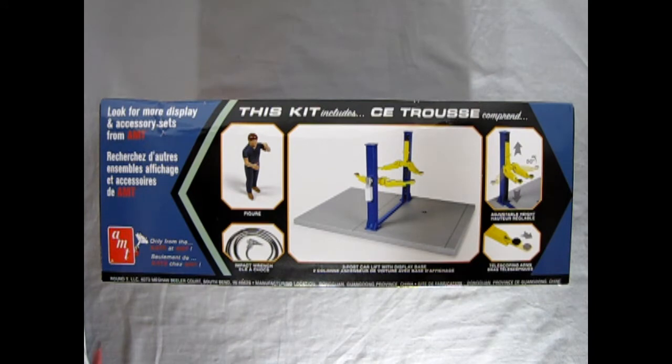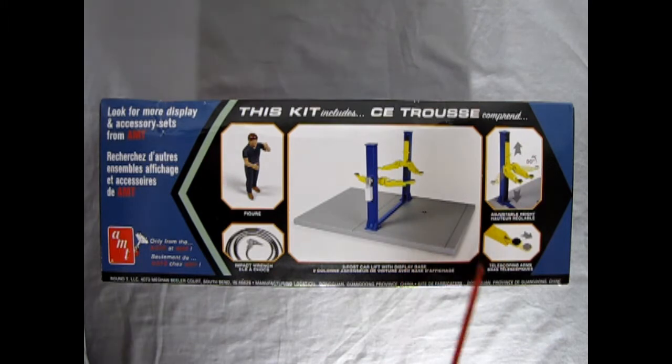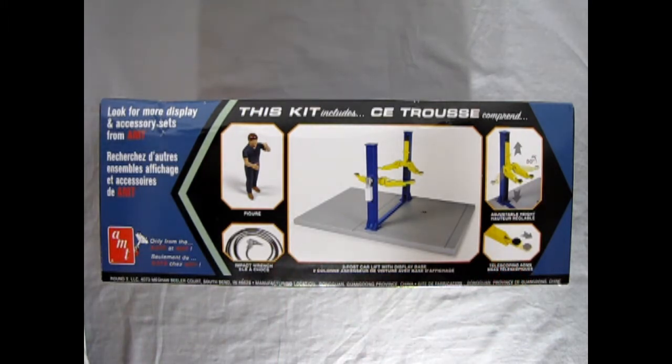Basically, there isn't too much to this kit, but all the action is in the hoist itself, which you can see is right here. You do get another mechanic figure, and you get an impact wrench with the coil hose. The lift is adjustable to go up and down, and then the arms swing out, and they also move out this way to adjust to any type of model car you may have.